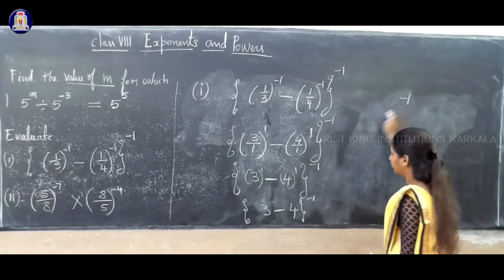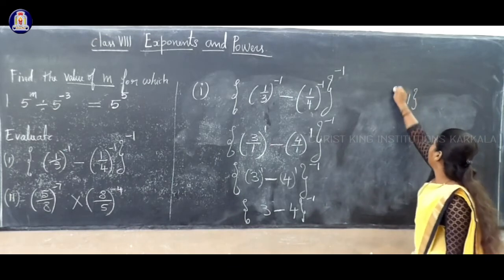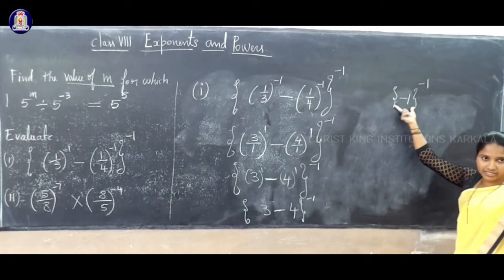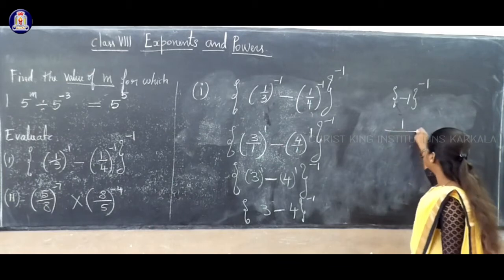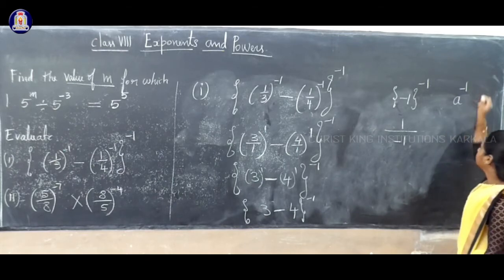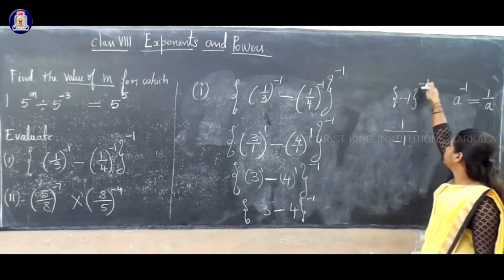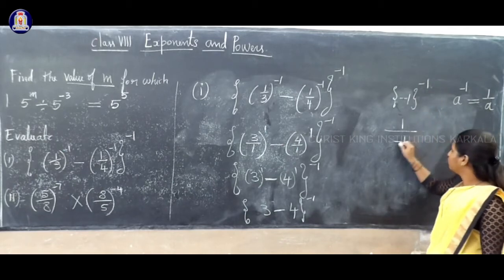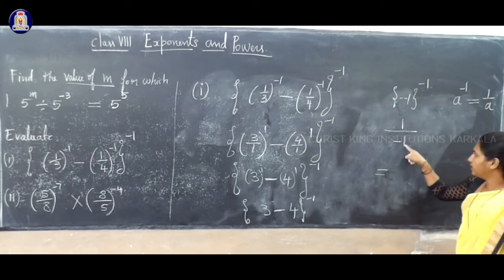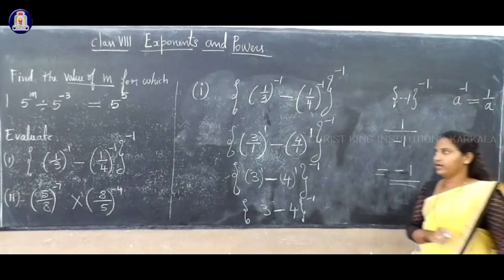4 minus 3 is 1, and the greater number is 4, so the sign is minus, giving minus 1. This is minus 1 whole power minus 1. A power minus 1 can be written as 1 by A, so minus 1 power minus 1 equals 1 by minus 1, which is minus 1. The answer is minus 1.